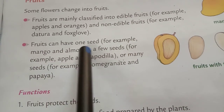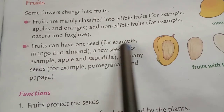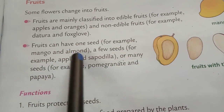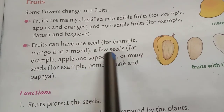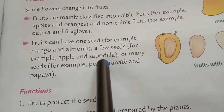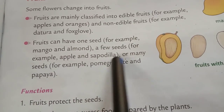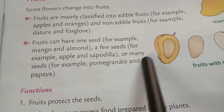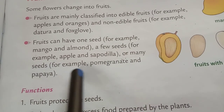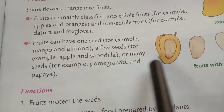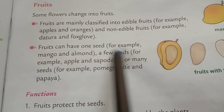Fruits can have one seed — for example, mango — a few seeds — for example, apple and sapodilla — or many seeds — for example, pomegranate and papaya.